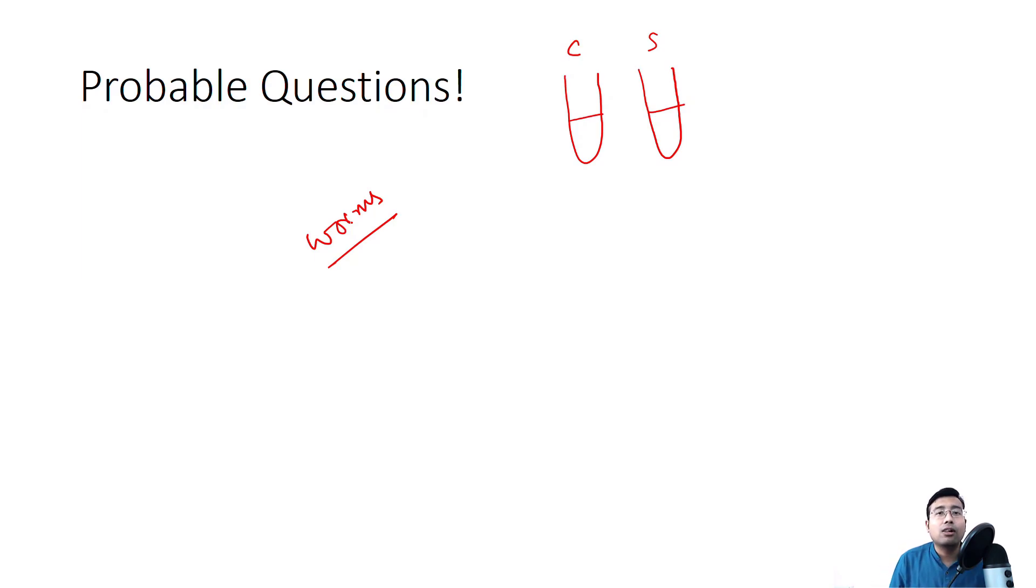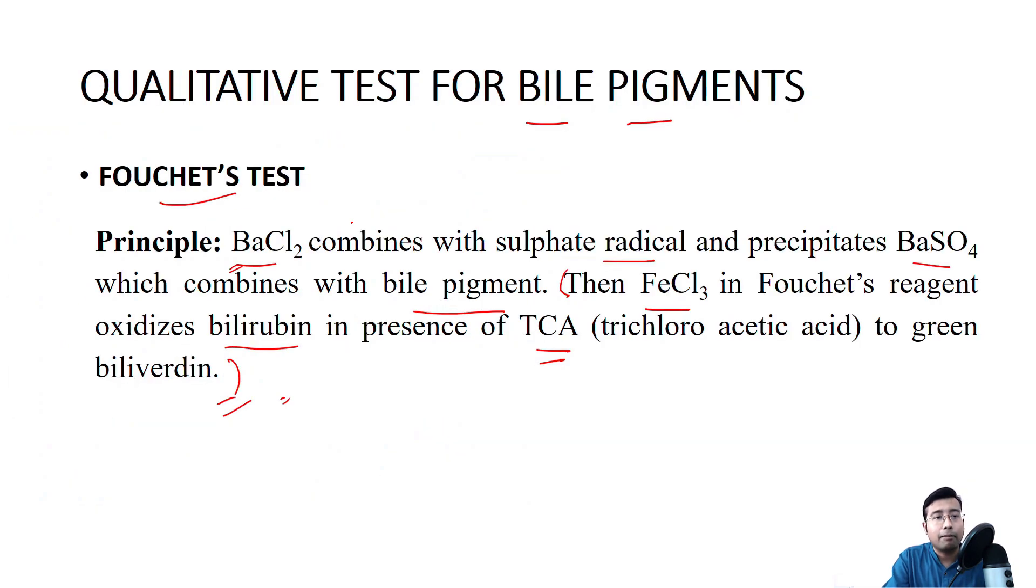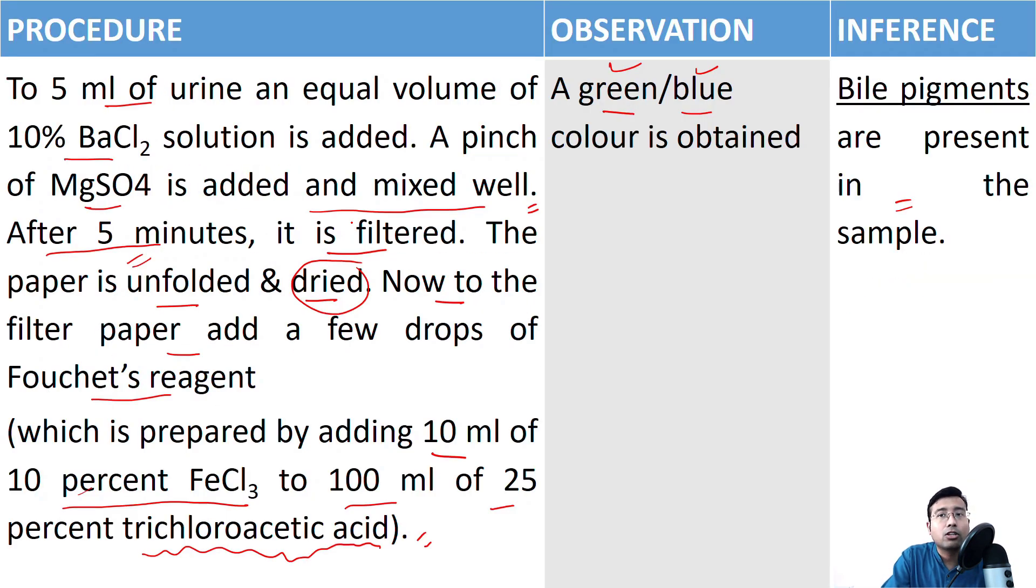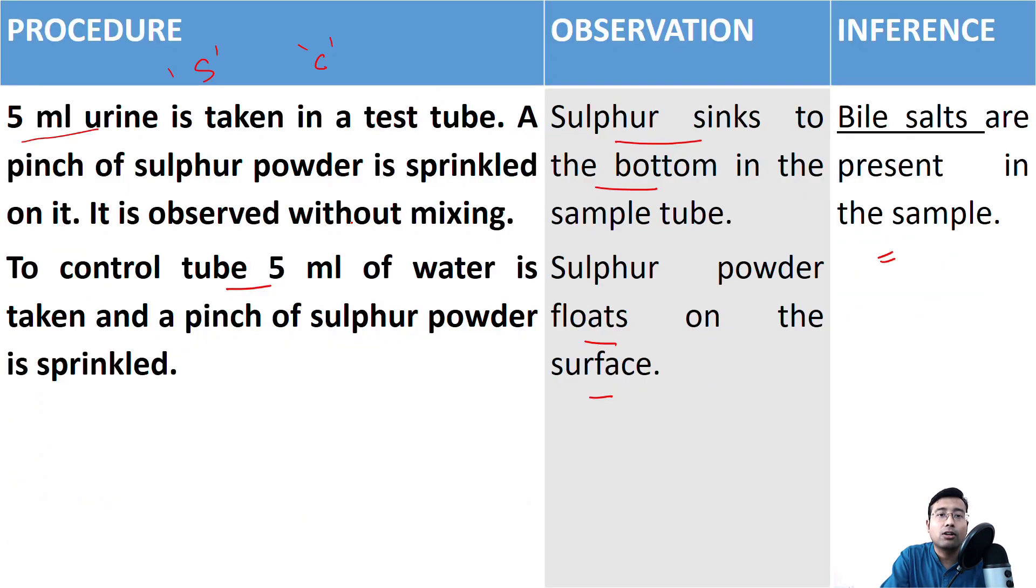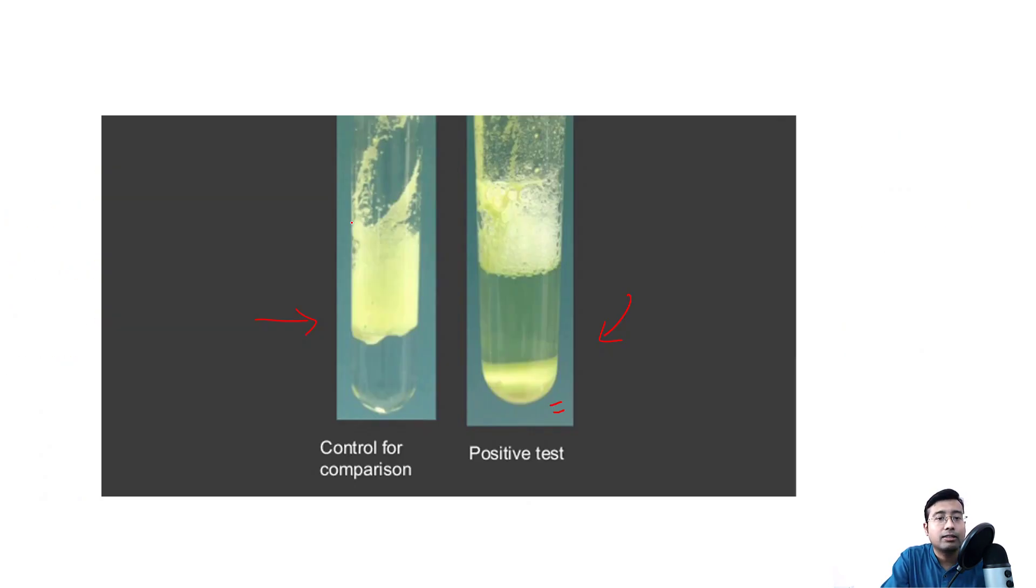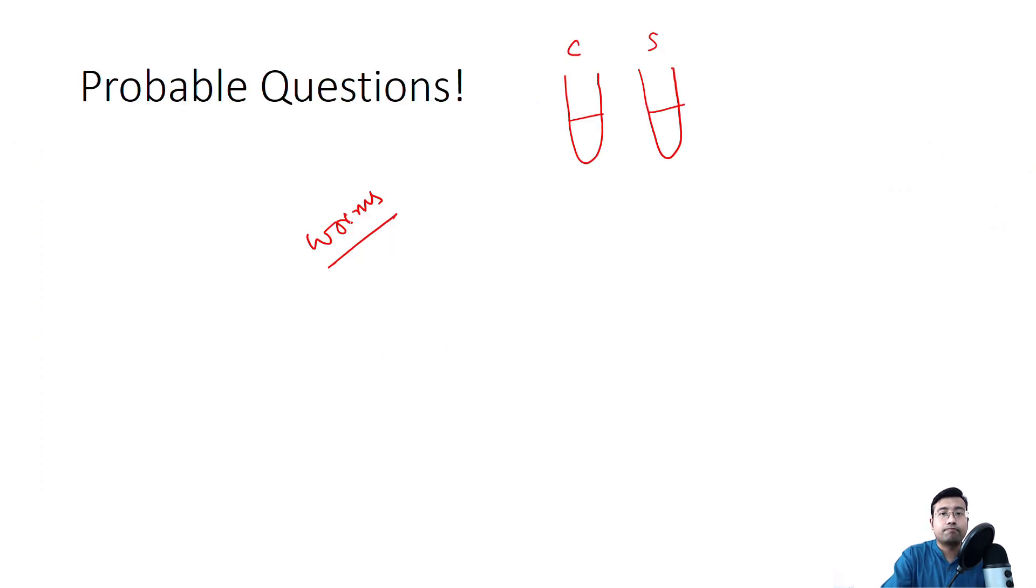This is all that you need to know for bile salt and bile pigment qualitative tests. Remember, you need to write the principle and procedure observation inference along with the alternative test in your practical notebook for both bile pigment and bile salts. So I hope now you find it much easier to practice all these tests hands-on.